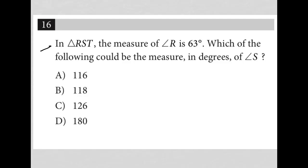This question says in triangle RST, the measure of angle R is 63 degrees. I'm going to treat this as a plug-in picture question, which means I'm going to actually draw my triangle that's been described. I'm going to label this as R, S, and T. I'm going to label this angle R as 63.